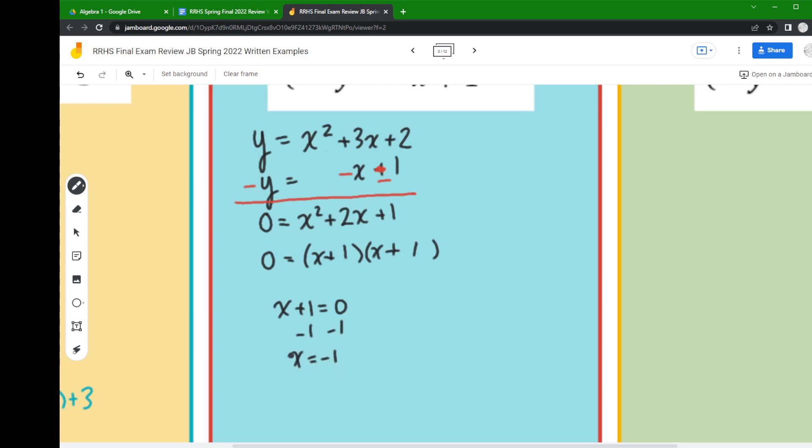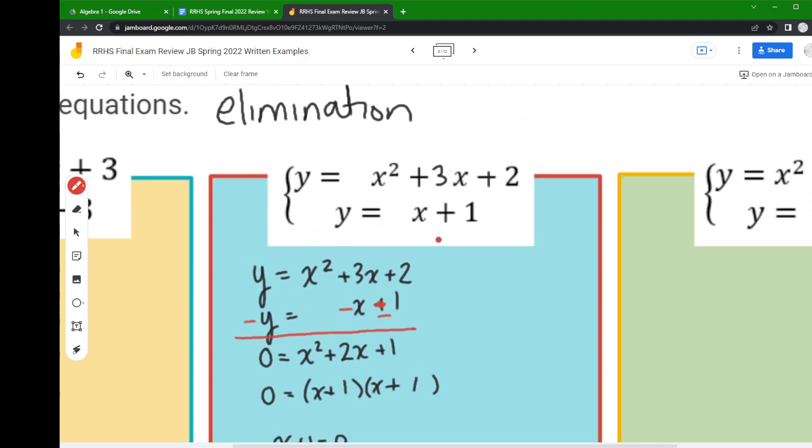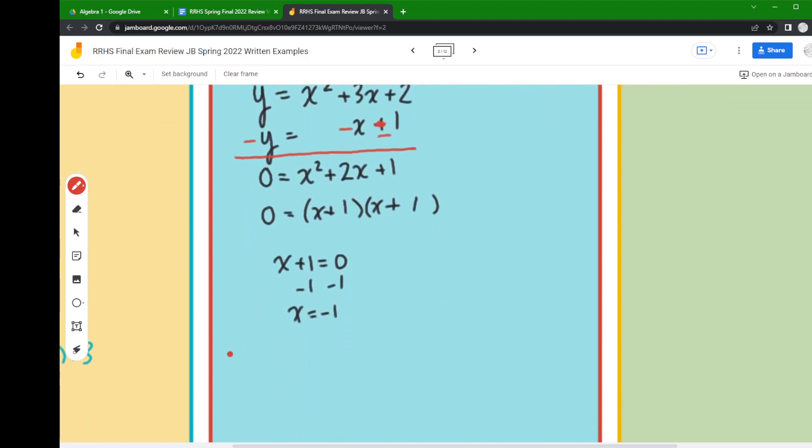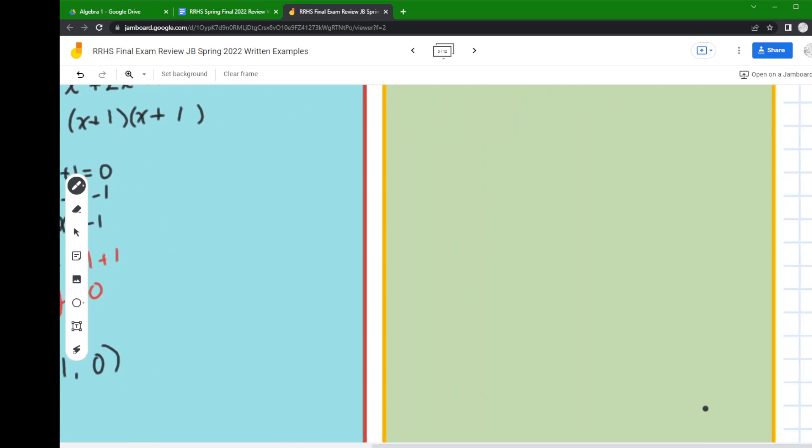So then our last step, we found our x, so to find my y value I take it back to my linear equation. I could do the quadratic, it's just I'm lazy. And so where the x is in that linear equation I put a negative one. And so negative one plus one is zero. So my final answer for this problem is (-1, 0).